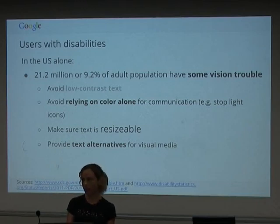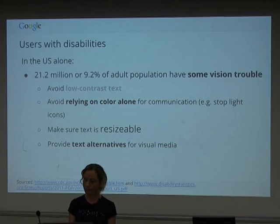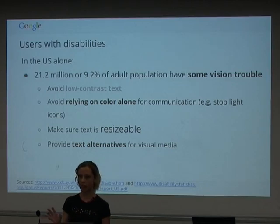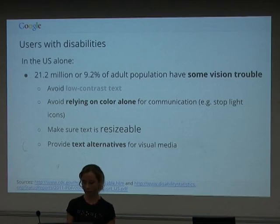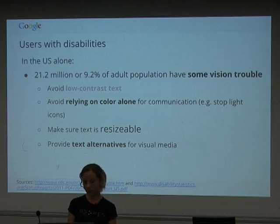Avoiding relying on colour alone for communication — things like stoplight icons where if the information is not communicated in any other way, it's completely inaccessible to someone who is colour blind, which is quite a large proportion of the male population. Also things like links which are only distinguished from other text by their colour — if there's no underline, how is anyone who's colour blind going to know that's a link? Making sure that text is resizable — in CSS terms, making sure you don't specify font size in pixels. And providing text alternatives for visual media.